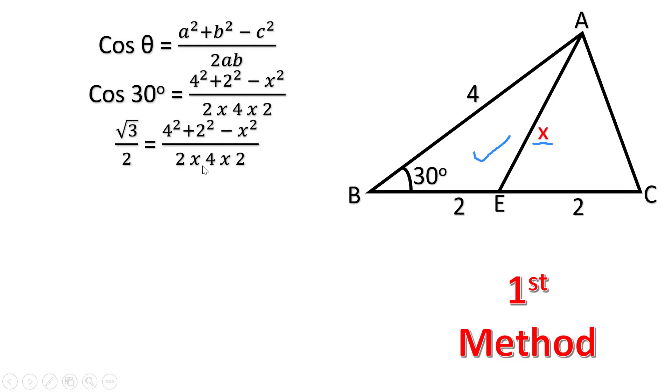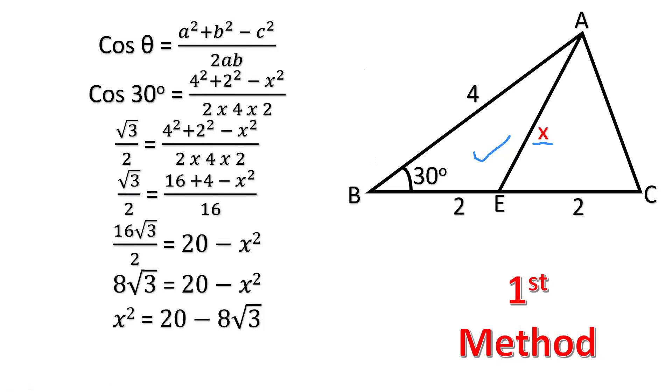Root 3 by 2 equals 4 square plus 2 square minus X square upon 2 times 4, because cos 30 is root 3 by 2. Solving the equation, we are getting the value of X square as 20 minus 8 root 3, and the value of X will come out to be under root 20 minus 8 root 3.